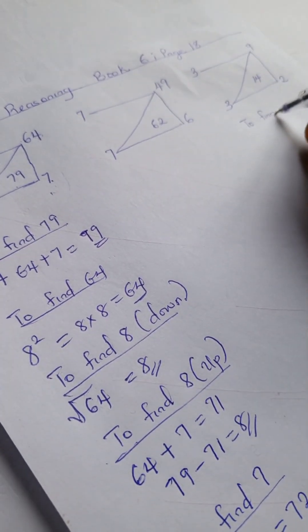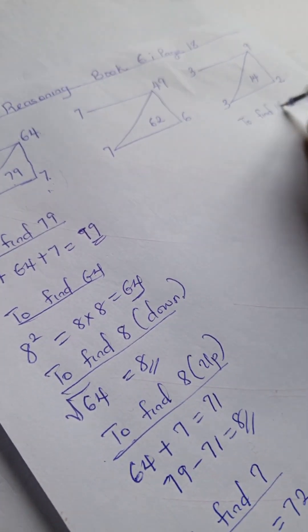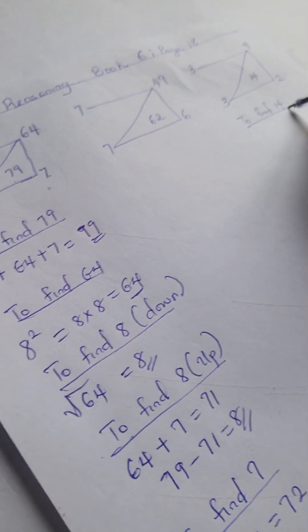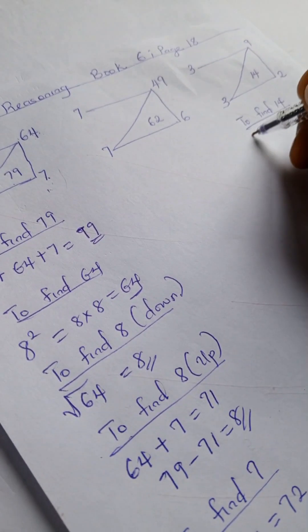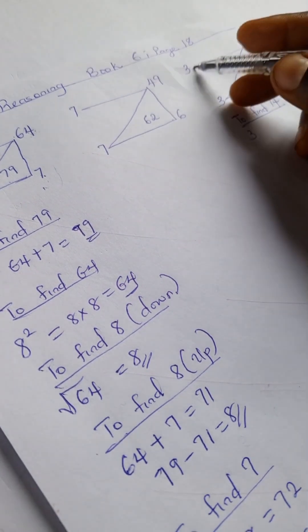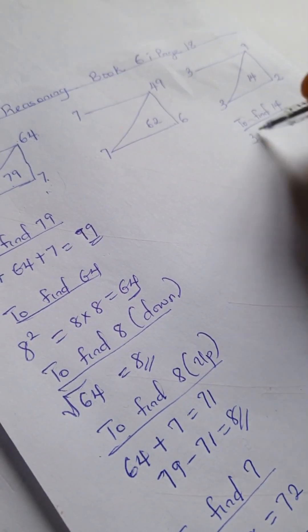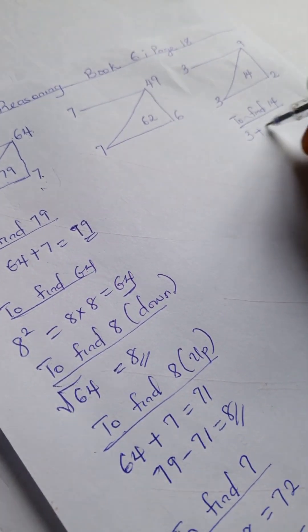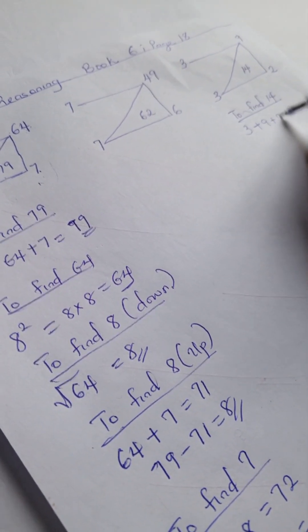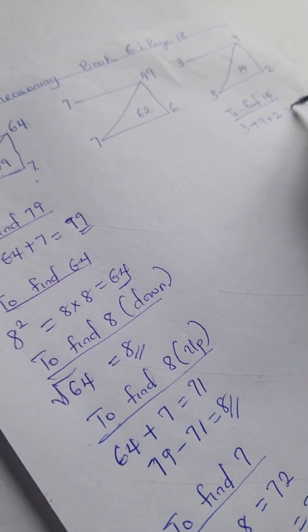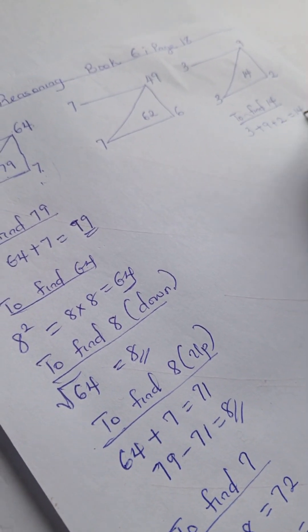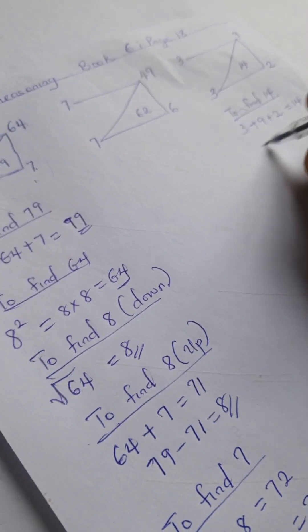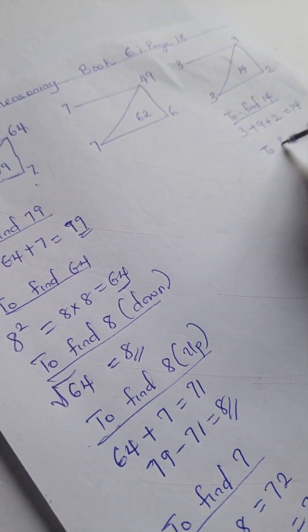To find 14, we're going to sum 3 plus 9 plus 2, which gives us 14.